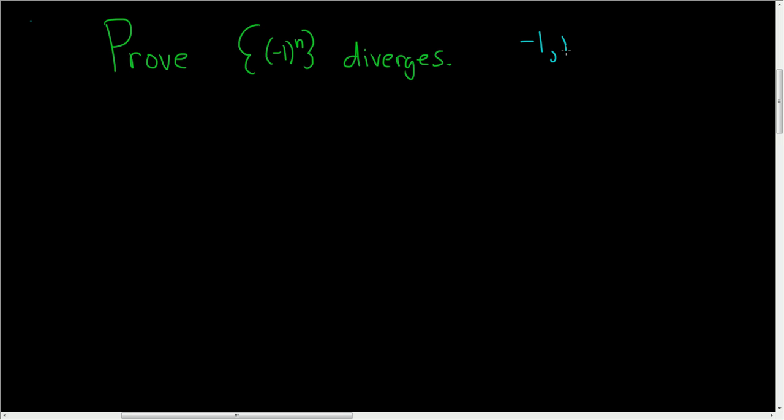When you plug in 2, you get 1. When you plug in 3, you get negative 1, etc. So intuitively, this sequence diverges. You can actually write the sequence out as a piecewise function. This is equal to 1 if n is even, and it's equal to negative 1 if n is odd.